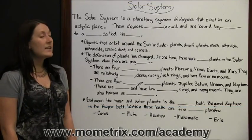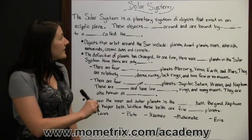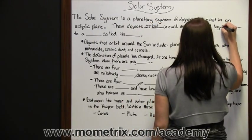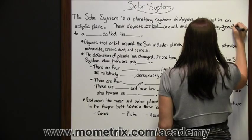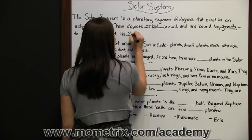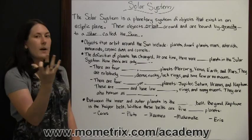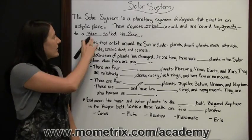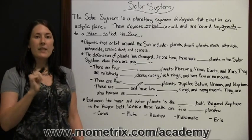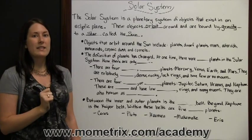The solar system is a planetary system of objects that exist in an ecliptic plane. These objects orbit around and are bound by gravity to a star called the Sun. All the other objects orbit around it because they are pulled in by the Sun's gravity.